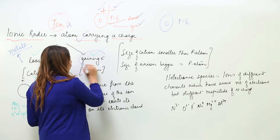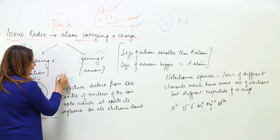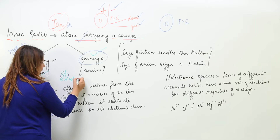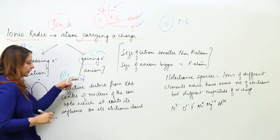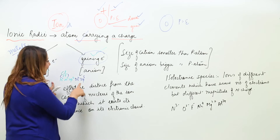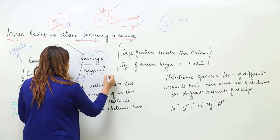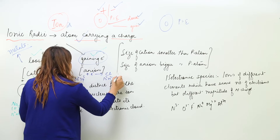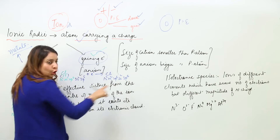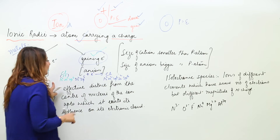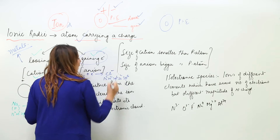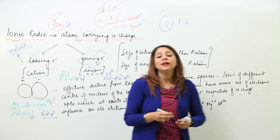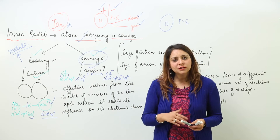Likewise, an atom can gain electrons. For example, chlorine has atomic number 17 and configuration 1s², 2s², 2p⁶, 3s², 3p⁵. It needs one electron because after gaining one electron its shell will be fully filled — 1s², 2s², 2p⁶, 3s², 3p⁶. All shells get complete and it becomes stable.